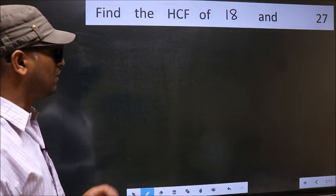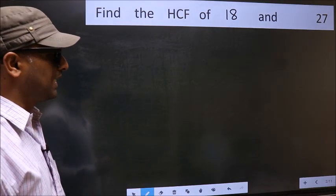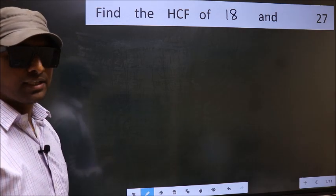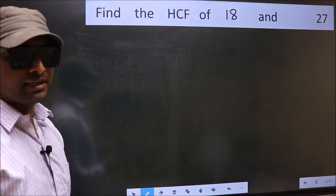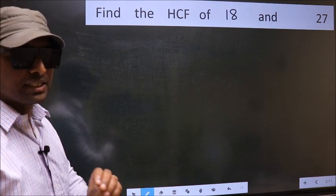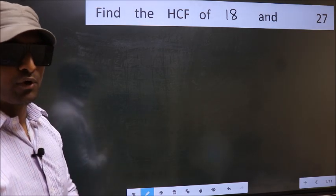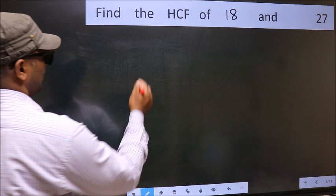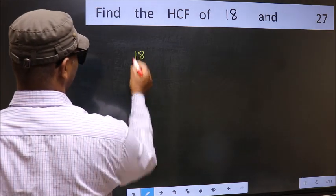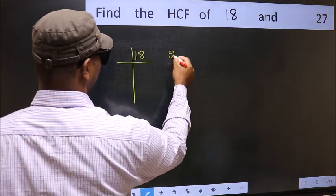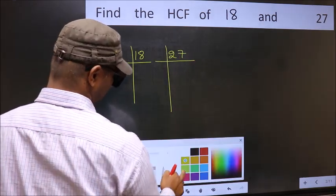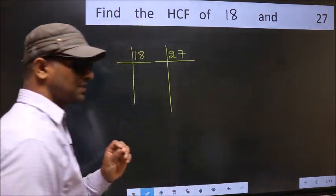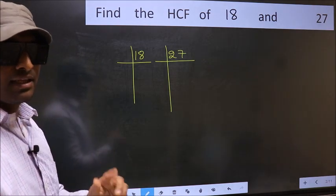Find the HCF of 18 and 27. To find the HCF, we should do the prime factorization of each number separately. What I mean is 18 and 27. This is your step 1. Next.